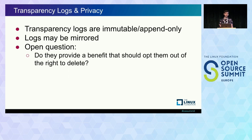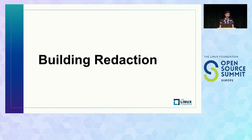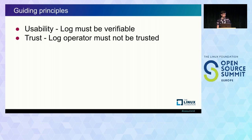Assuming we'll need some technical solution, that's where we come to building a redaction mechanism — a way of removing data from a log when requested, while not breaking the cryptographic integrity of the log. The primary guiding principles are: first, usability — the log must remain verifiable, so we cannot break the cryptographic properties of immutability and append-only. Second, I don't want the log to be overly trusted — I want to hold the log accountable for redactions, ensuring it actually redacts the information and can't redact too much.